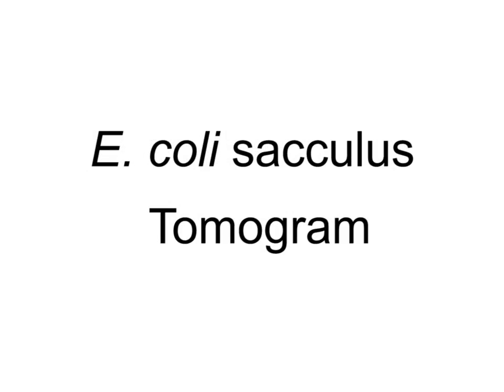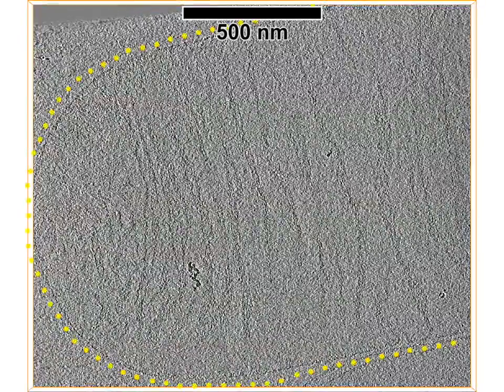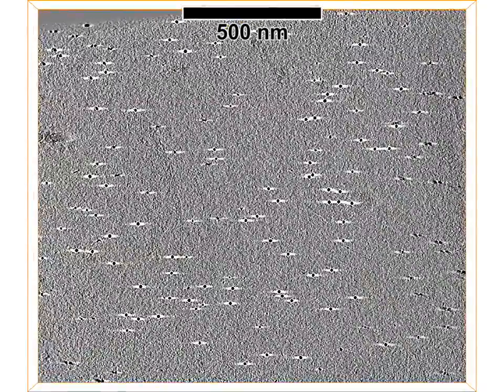This is a slice-by-slice view of the tomogram. The sacculus is outlined by a yellow dotted line. The sacculus is flattened, so it appears wider than an intact cell.